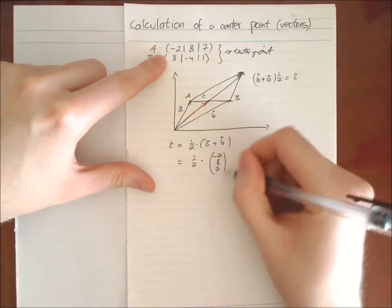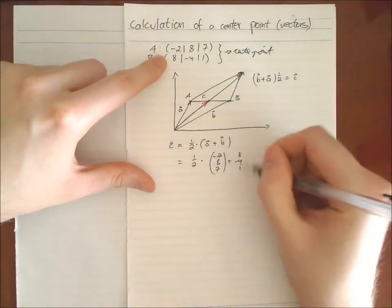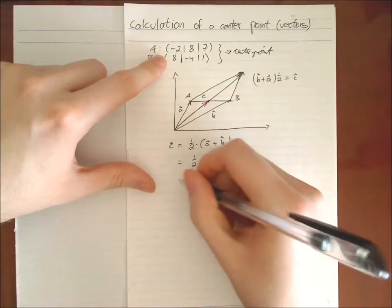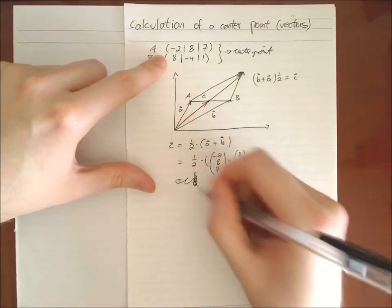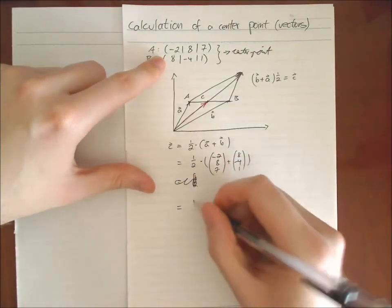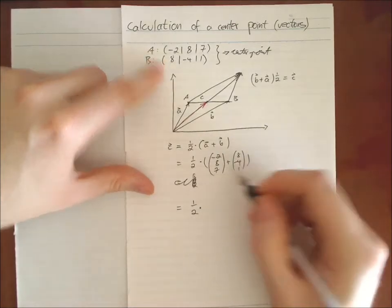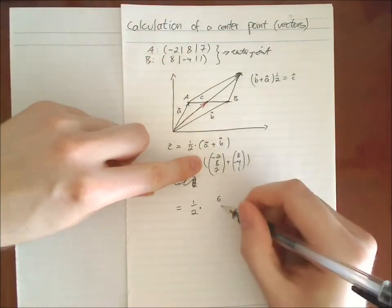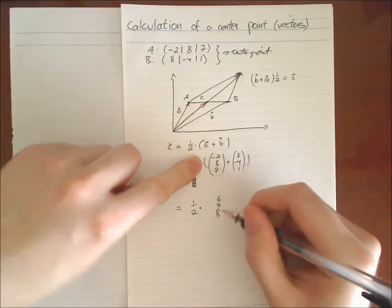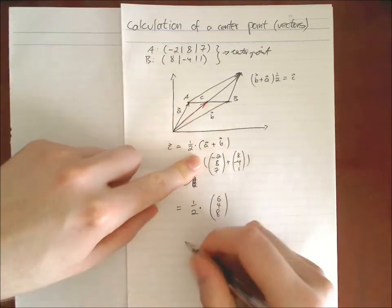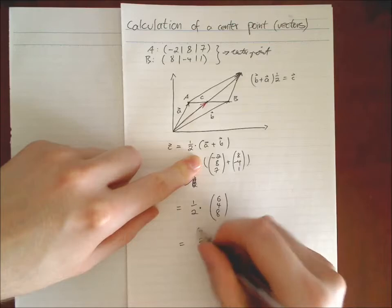A half times then minus two, eight, seven plus eight, minus four, one equals a half times six, four and eight, which is then three, two, four.